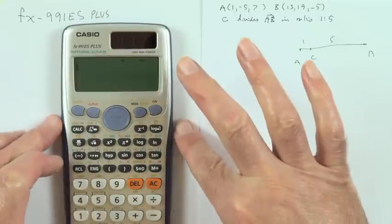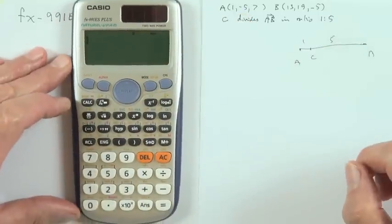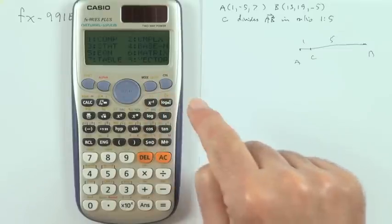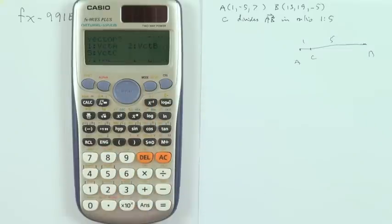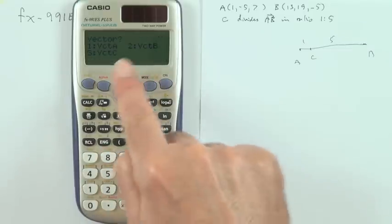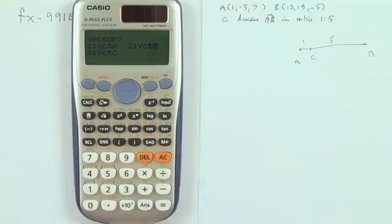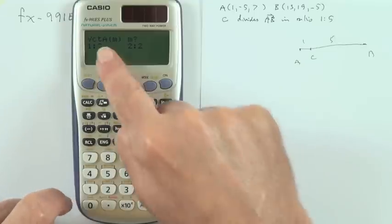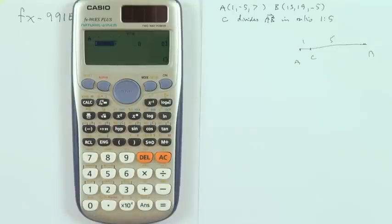Switching it on, select mode, vectors is under 8, and then immediately it gives you the option of entering 3. There's only 3, you can only store 3 vectors in the memory. Press 1 and dimension it with 3, so I've got a 3-dimensional vector.